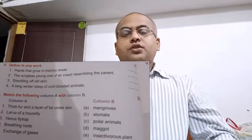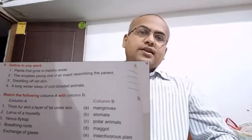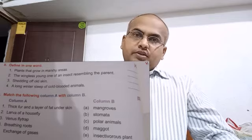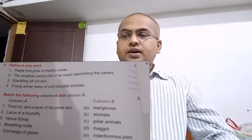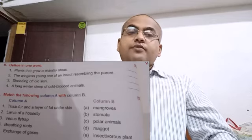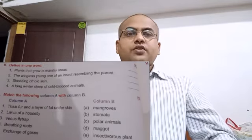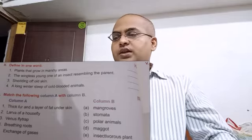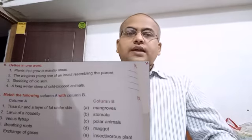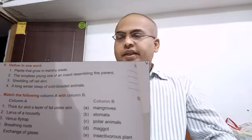Now comes the next section: Match column A with column B. The first option in column A is thick fur and a layer of fat under skin. We know that polar whales have a thick, heavy fur and a thick layer of fat under their skin for protection from cold. Next question: Larva of a house fly. The larva of a house fly is called a maggot.